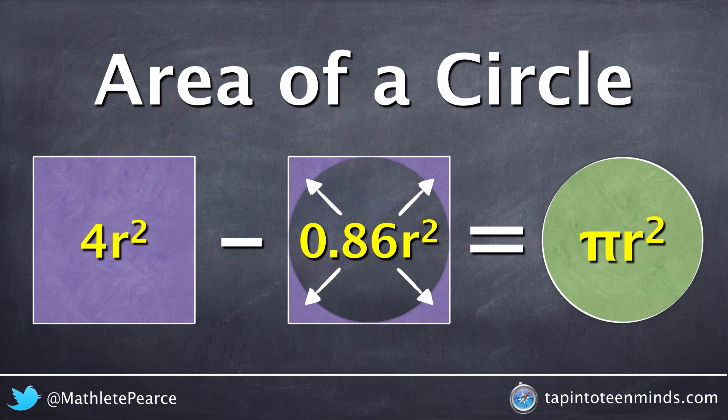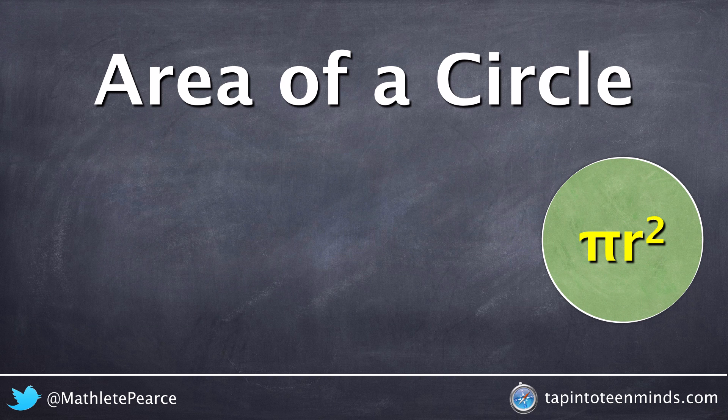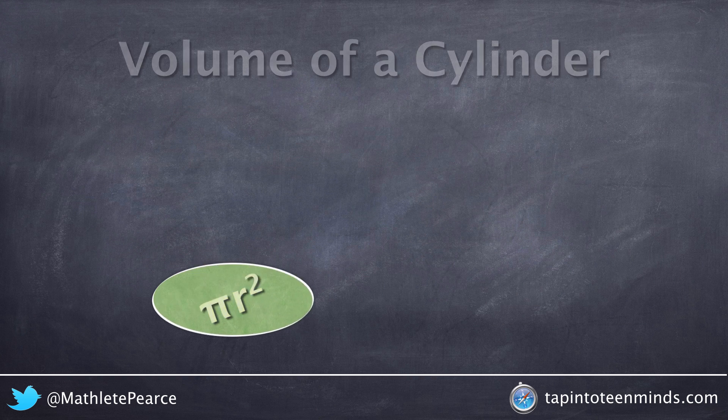Later in another video, we'll talk about where that 0.86 times r squared comes from. But for now, we're going to go back to the base of our cylinder, which is a circle. We know how to find the area of a circle.